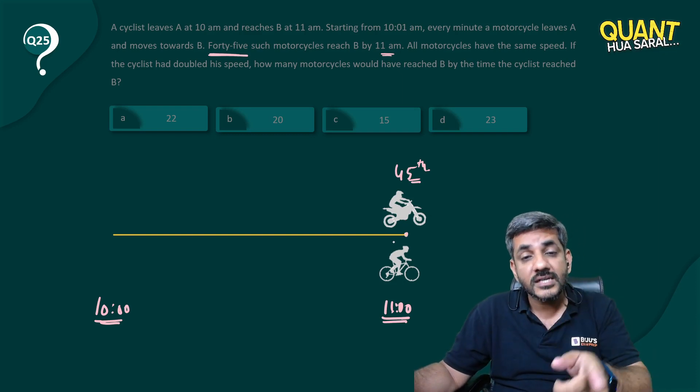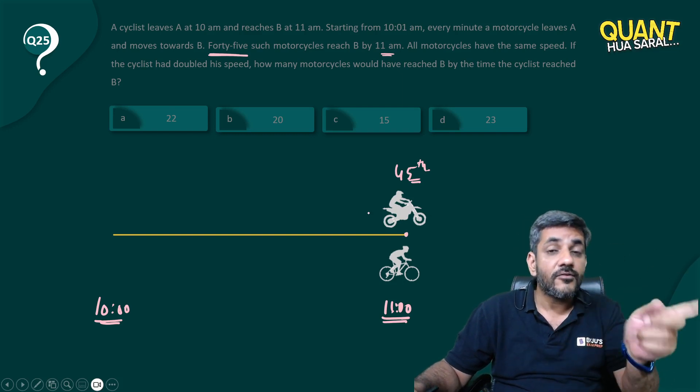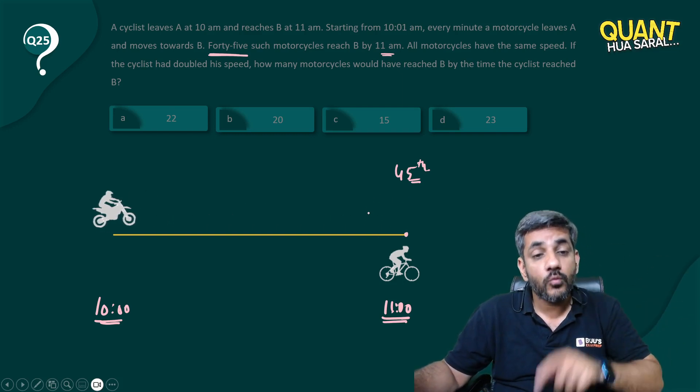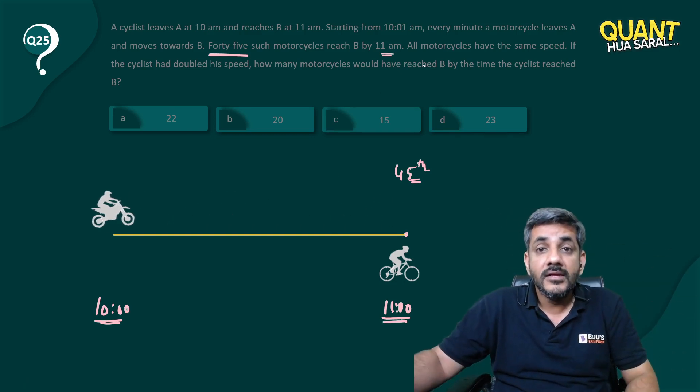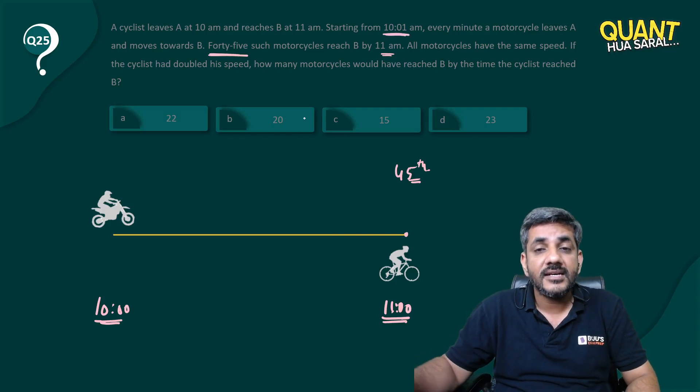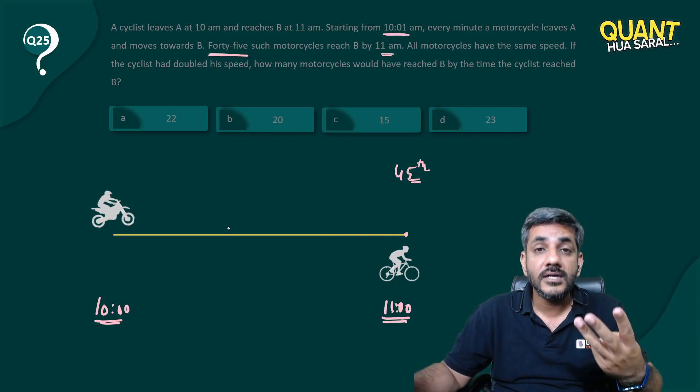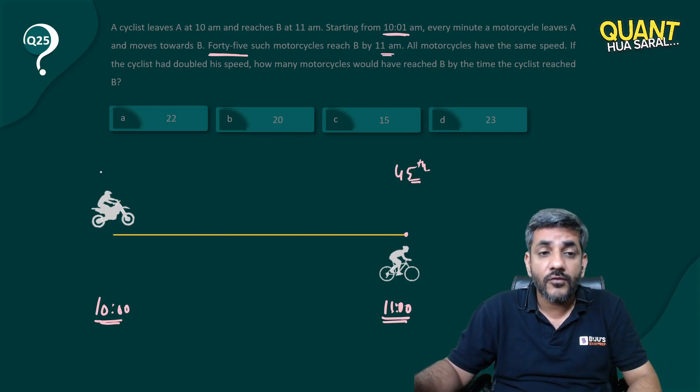At what time he started from there? The first motorcyclist has started at 10:01, second at 10:02, third at 10:03, and the 45th must have started at 10:45.